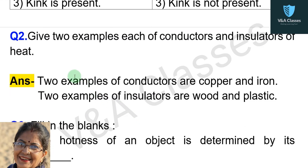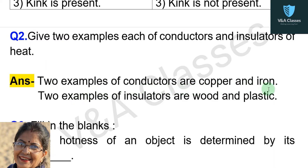Question number two: give two examples each of conductors and insulators of heat. Two examples of conductors are copper and iron. Two examples of insulators are wood and plastic.